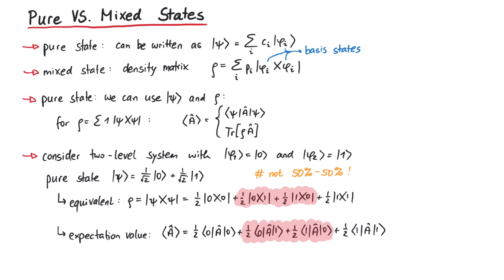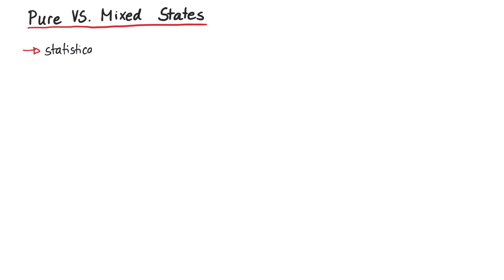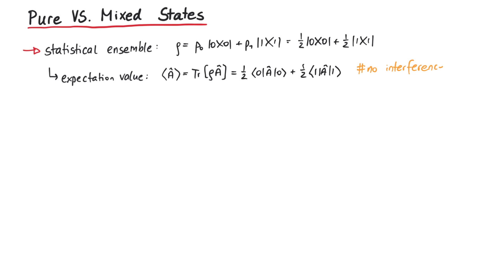If we really want to have 50% of our system in the state 0 and 50% of our system in the state 1, we need the density matrix. Such a system is called a statistical ensemble and would be described by the density matrix 1 half |0⟩⟨0| plus 1 half |1⟩⟨1|. In this case, the expectation value of the operator only contains the matrix elements of 0 0 and 1 1. There are no interference terms.